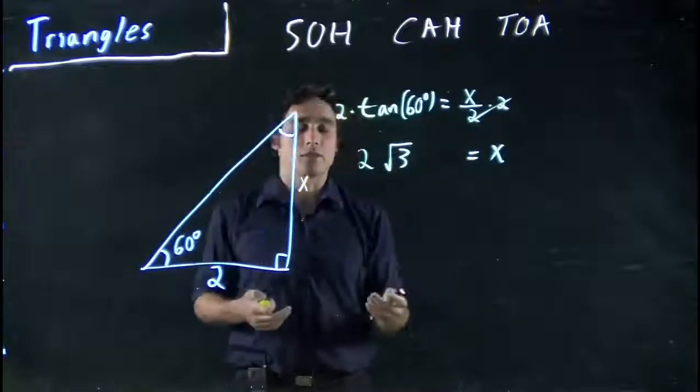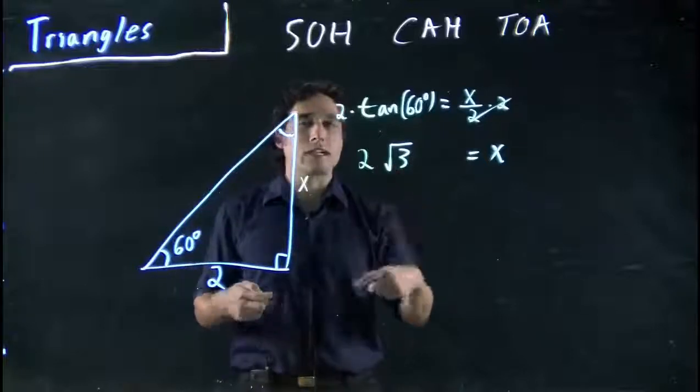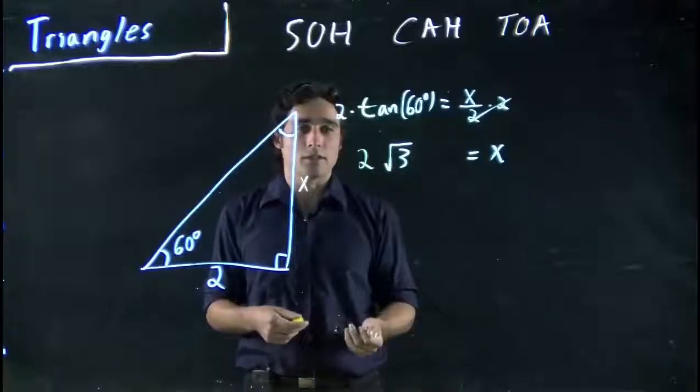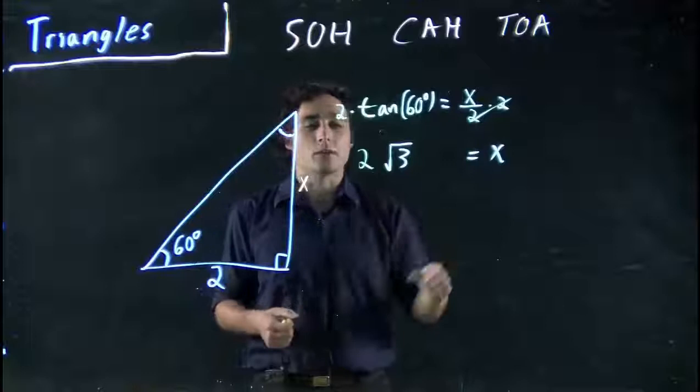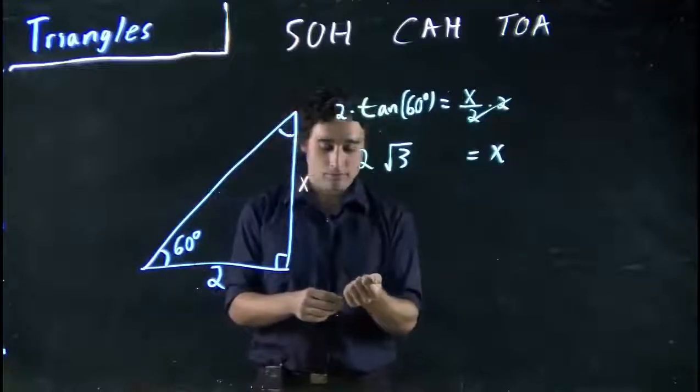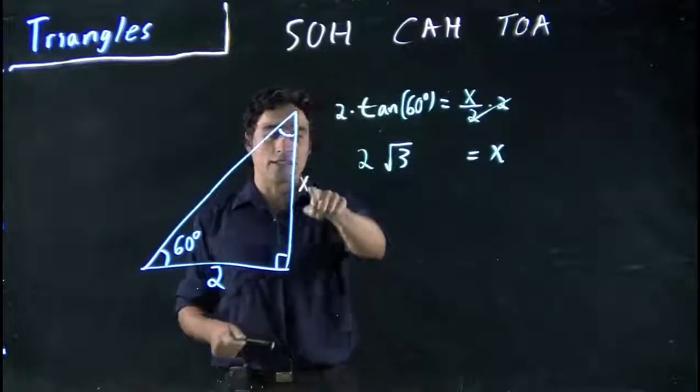And if I wanted to, I could evaluate that as a number. Like always, I could take the square root of 3, get the rough decimal number, multiply that by 2, and have a rough number. But this is nice and exact, so I'll leave it how it is for now. Great. So I've got this length.